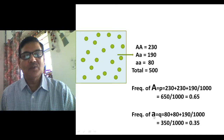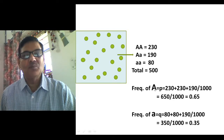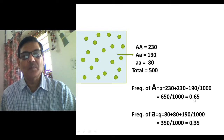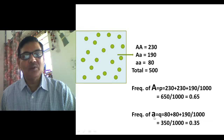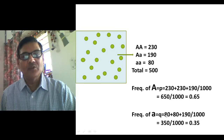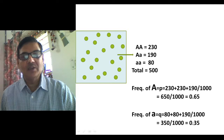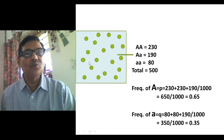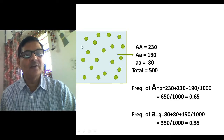Since p + q = 1, if the frequency of one allele is 0.65 then the frequency of the other allele will be 0.35, because 1 minus 0.65 equals 0.35. You can also verify this directly: (80 × 2) + 190 = 160 + 190 = 350, divided by 1000, gives 0.35. So the frequency of A alleles is 0.65 and small a alleles is 0.35.